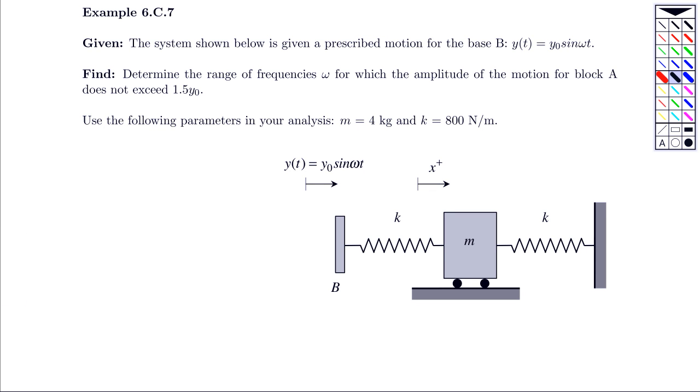What we have in this problem is a single degree of freedom system made up of a block of mass m, a spring of stiffness k between the block and ground, a spring of also stiffness k between the block and base b, where b is given a prescribed motion of y naught sine omega t.